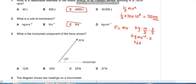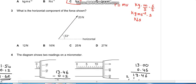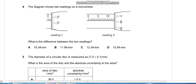Question number three: What is the horizontal component of the force shown? The horizontal component of this force is 12 cos 53, which makes up 12N.